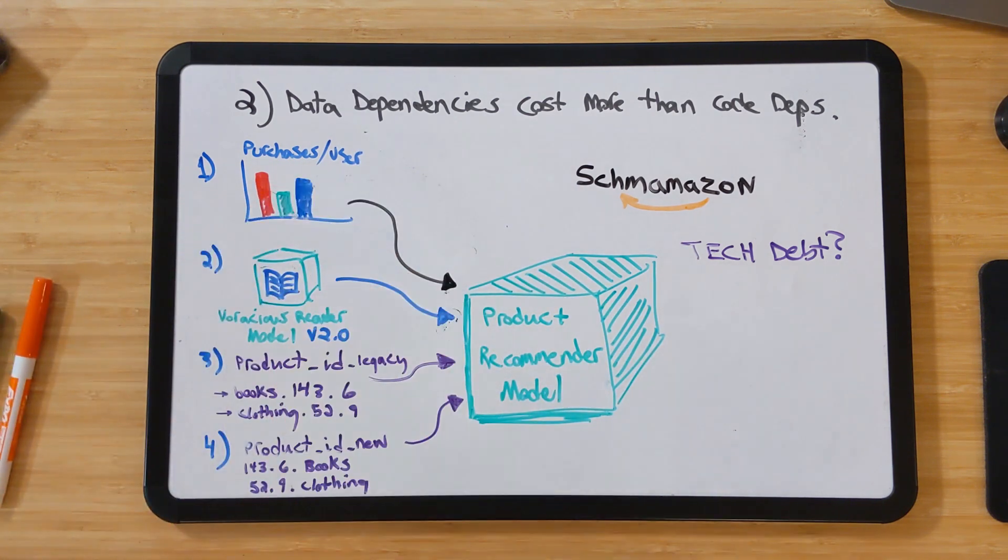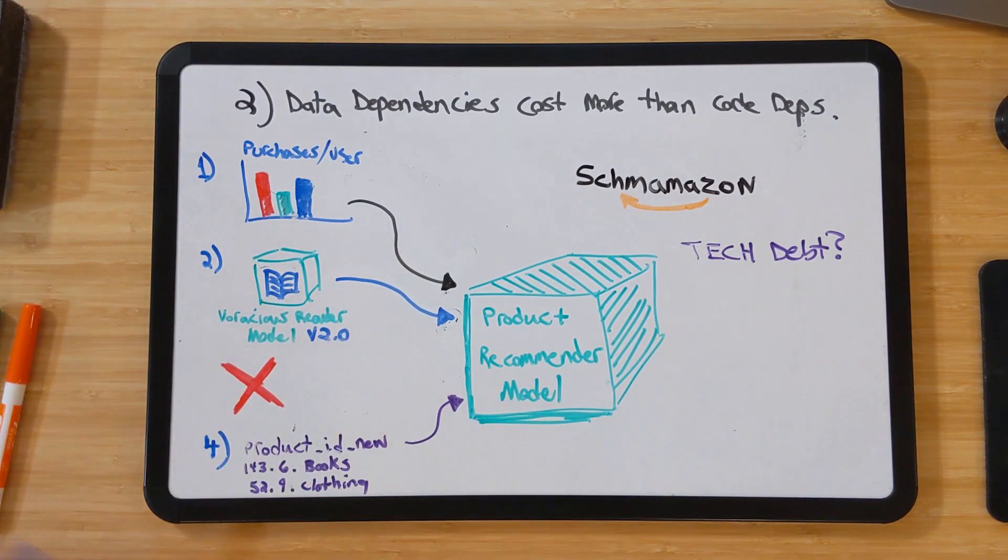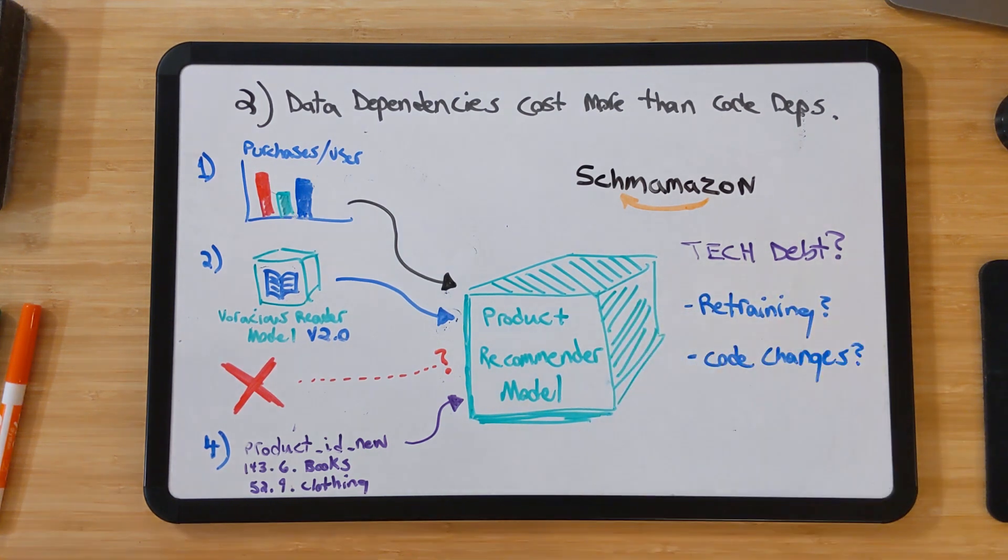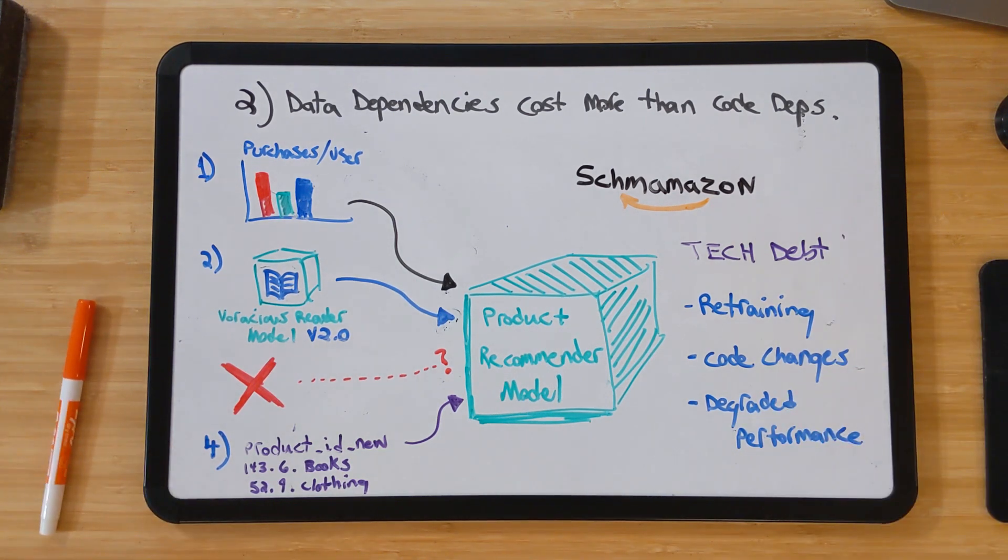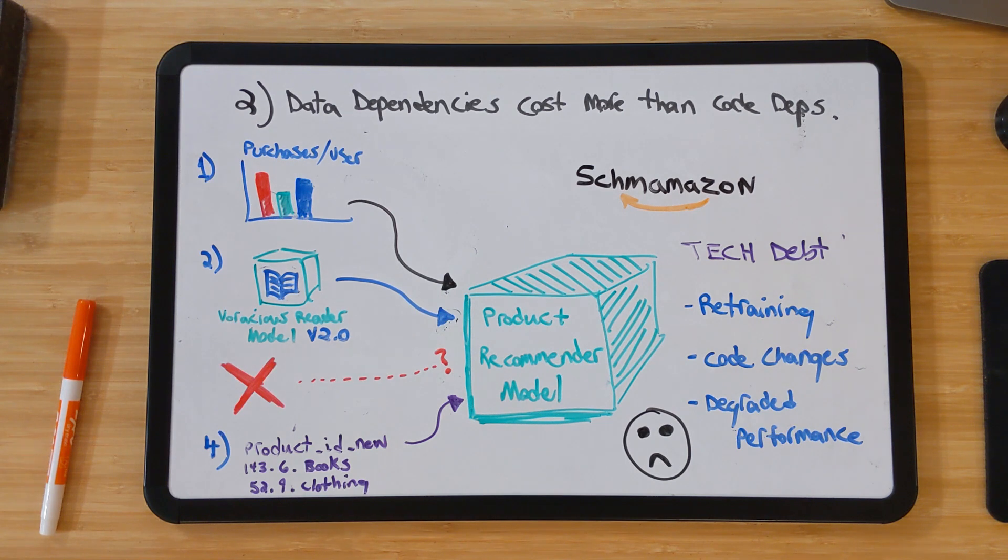Or, that legacy product ID system might be shut off entirely, breaking our model completely. These changes would at a minimum warrant retraining of our product recommendation engine to avoid decreasing accuracy, but might even require rewriting the entire model to adapt to a change in an upstream dependency.